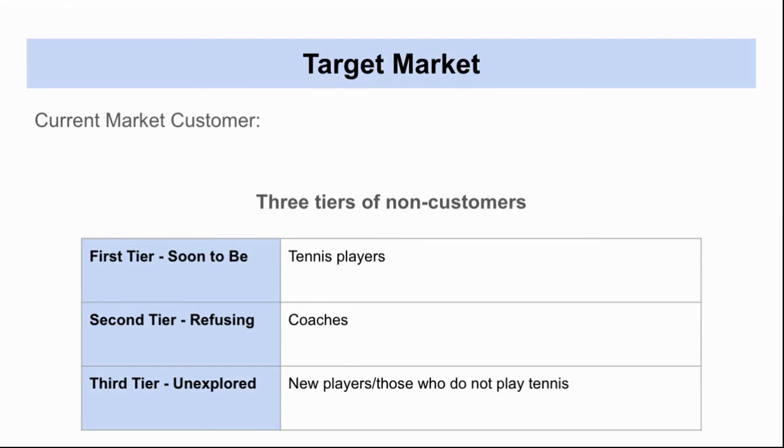So the second tier are coaches. This is going to be a more interesting market because coaches are definitely set in their ways often with everything from drills to even the tennis ball they use. Some really want to use Wilson while others want to use Penn tennis balls. So this would be something that could be difficult. But I think once we get coaches, then we can get into other more bigger markets such as tennis clubs, country clubs in general, because those are people who are constantly buying tennis balls.